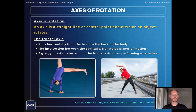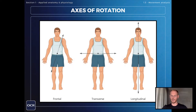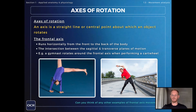The frontal axis runs horizontally from the front to the back of the body, which we can see on the left hand side of the diagram. A really good example of rotation around the frontal axis can be seen when performing a cartwheel in gymnastics.